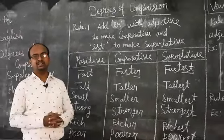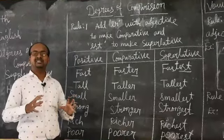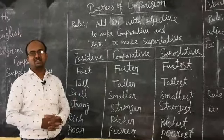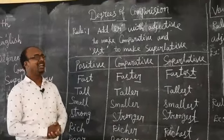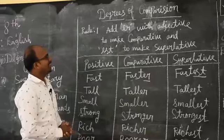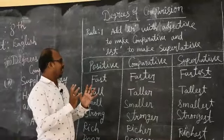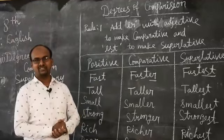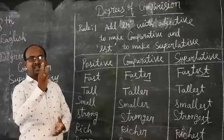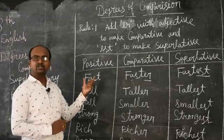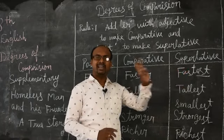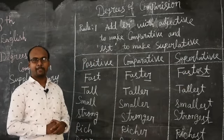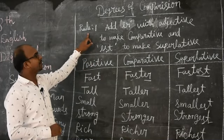Degrees of comparison — what do you mean by degrees of comparison? Degrees means giving some quality, comparing — we are comparing the person, thing, or place, whatever it might be. So we are giving some quality to an adjective; that is called degree. In degrees of comparison, we have three terms: positive term, comparative term, and superlative term.